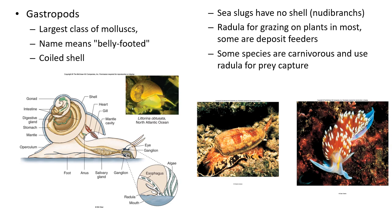Gastropods are your snails, including sea snails and sea slugs. Sea slugs without shells are called nudibranchs. They have a radula for browsing. Some can be highly toxic and poisonous and can kill you — especially if they're brightly colored, leave them alone if you see them in the ocean.